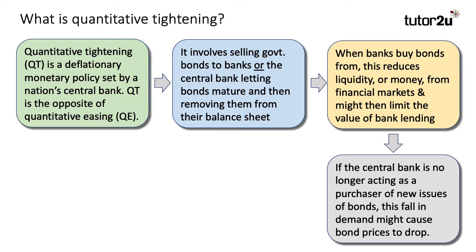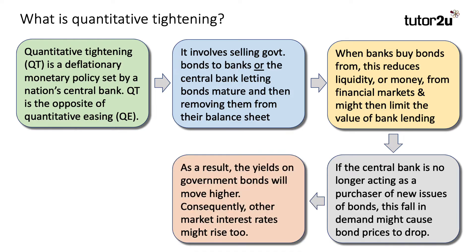If the central bank is no longer acting as a purchaser — a buyer of new issues of bonds — this could cause a fall in demand for bonds in the bond market, and that could, other things being the same, cause bond prices to drop. As a result, ceteris paribus, the yields on government bonds will move a little higher, and consequently, other market interest rates that take their cue from the yield on government bonds might go up as well.